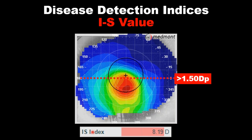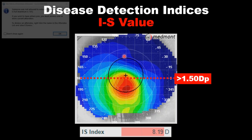The most important one to surgeons that do LASIK is the IS value — what they're looking for is whether the inferior shows steeper curvature than the superior. In this case, the inferior cornea is 8.19 diopters steeper in the inferior hemisphere relative to the superior hemisphere.